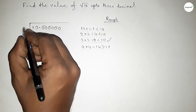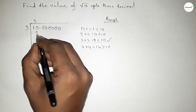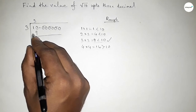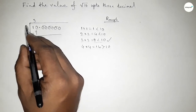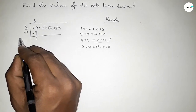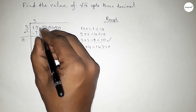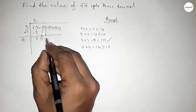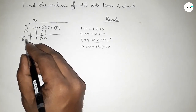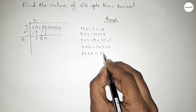So we should put here 3. Taking 3, so 3 times 3 equals 9. Now subtracting: 10 minus 9 equals 1. The last digit is 3, so adding 3: 3 plus 3 equals 6. The decimal point goes here and the first pair of zeros comes down.